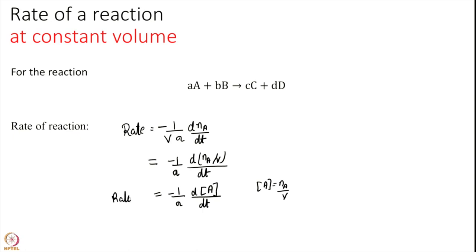Nonetheless if volume is constant I can write this as d N A over volume over d T and so this becomes equal to minus 1 over a d concentration of A over d T where concentration is defined to be N A over volume. So this formula of rate holds true only for constant volumes. In this course at least we are going to stick to this definition. We are going to assume volume is constant.